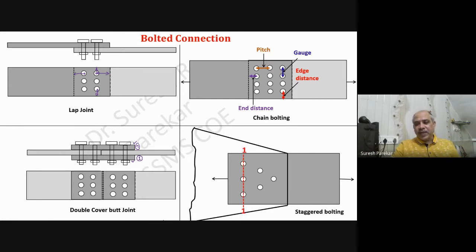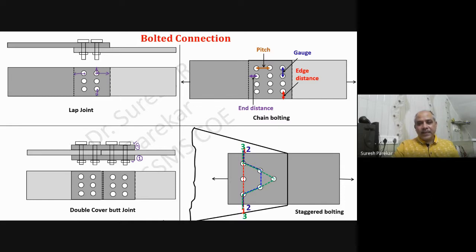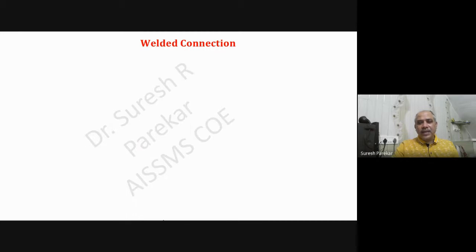Then we have staggered bolting, where we have to calculate the effective net area Anet, which should be minimum. We have section 1-1, section 2-2, and section 3-3. We calculate for all three and the minimum gives us the net area. This completes part three.